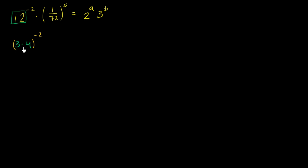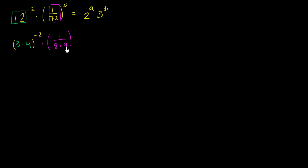3 is clearly a power of 3, and 4 is clearly a power of 2 — it's 2 squared. So we have 3 times 4 to the negative 2 power. Then 1 over 72 can be rewritten as 1 over 8 times 9, since 72 is 8 times 9. 8 is a power of 2, 9 is a power of 3, and we raise that to the fifth power, equal to 2 to the a times 3 to the b.